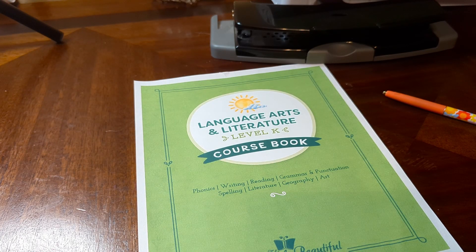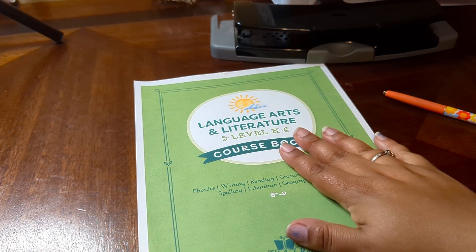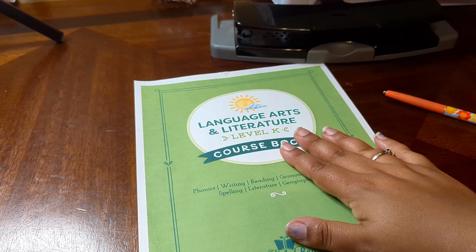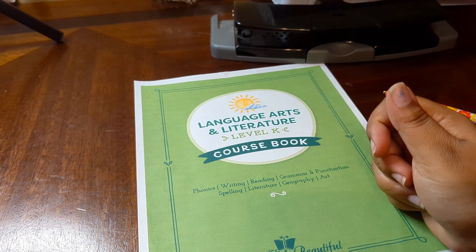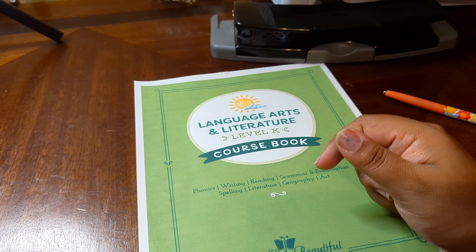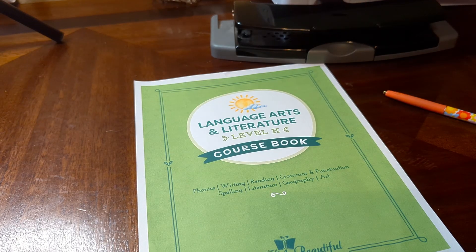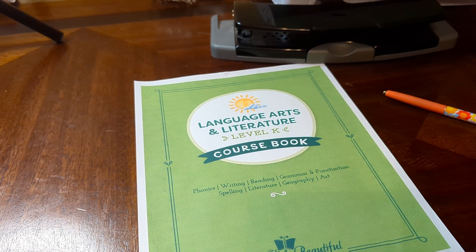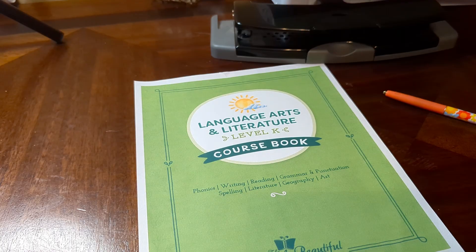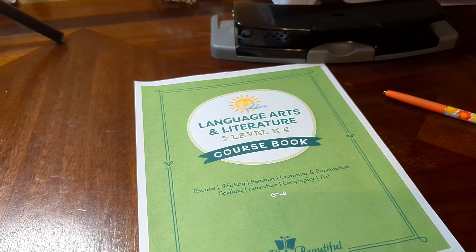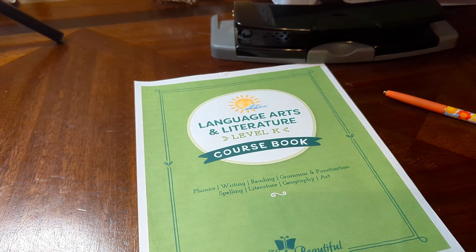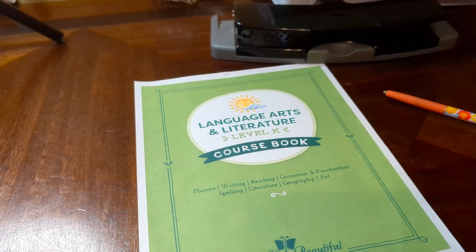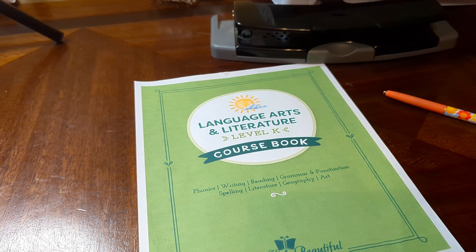Now, the literature for level K comes in three parts. It will be the course book is one part. You also get what's called booster cards. And I'll show you those separately. And then you also get these little books. And they're kind of like Bob books if you're familiar at all with a Bob book where there's just a couple pages and there's only a few sight words or CVC words on each page or easy words that they can sound out. So, you get those three components with the level K literature course book.